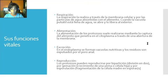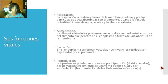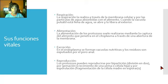Ahora miremos la reproducción. Los protozoos pueden reproducirse por bipartición, o sea que se dividen en dos; por gemación, que es el crecimiento de una yema o una célula hija; y por esporulación, que es la fragmentación de la célula madre en esporas. Aquí abajo en la descripción les voy a dejar un video que yo hice hablando sobre la división celular, donde hablo de todo eso.